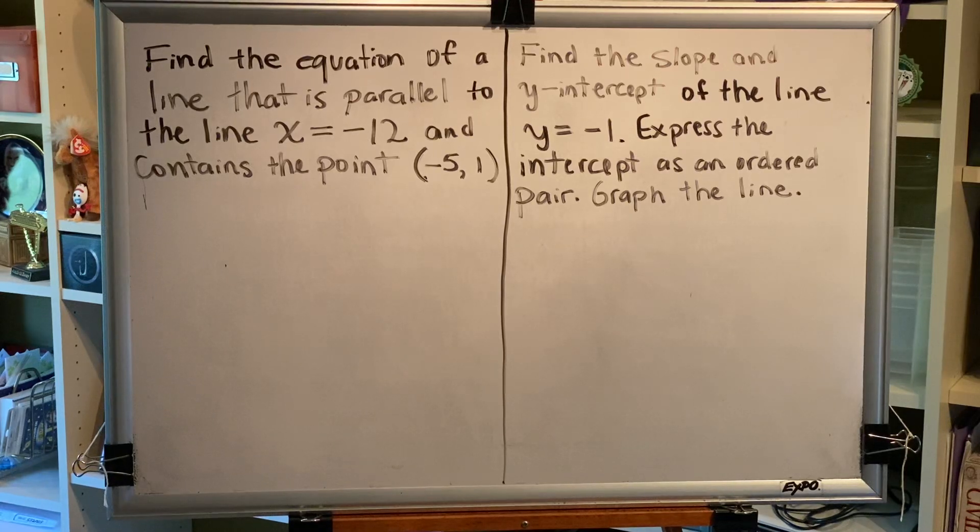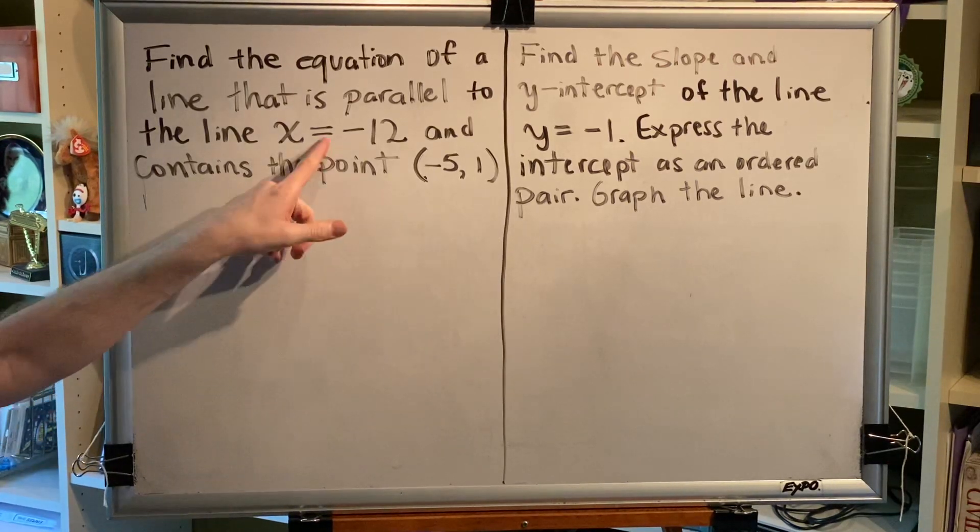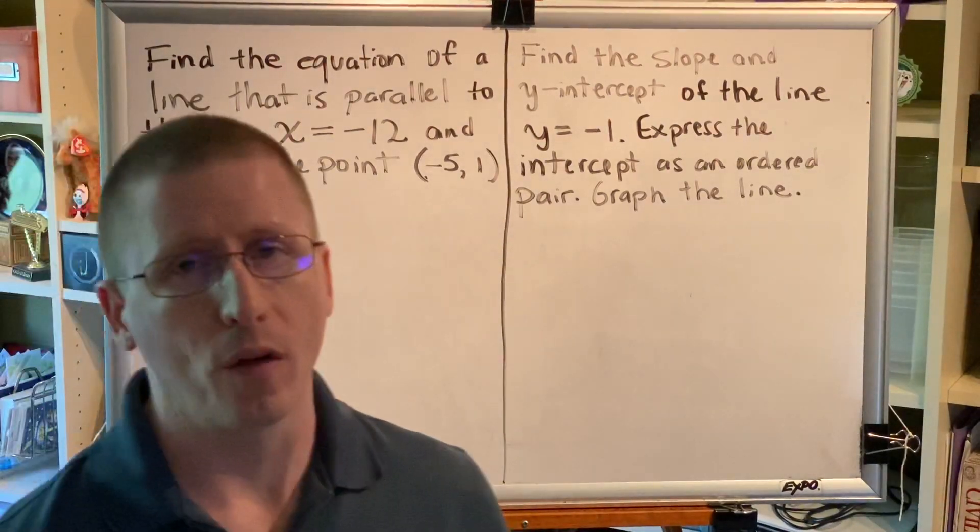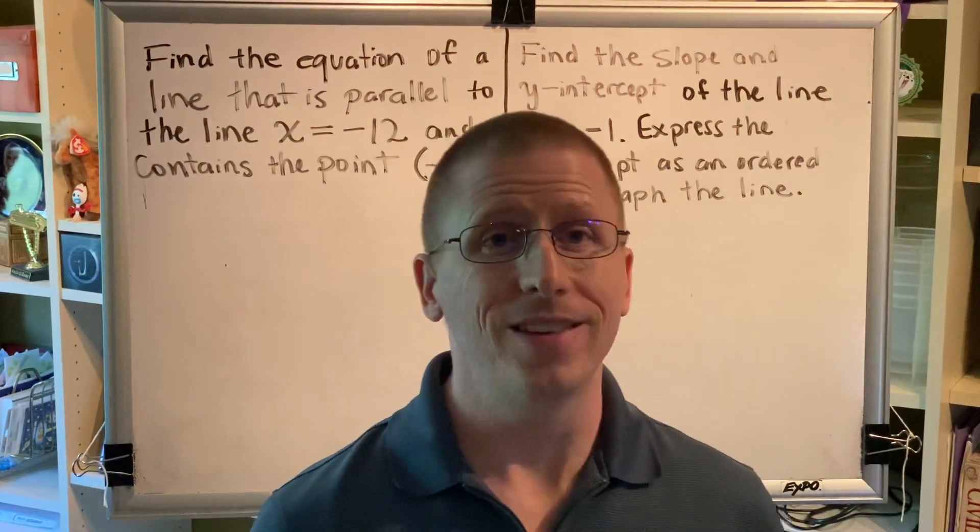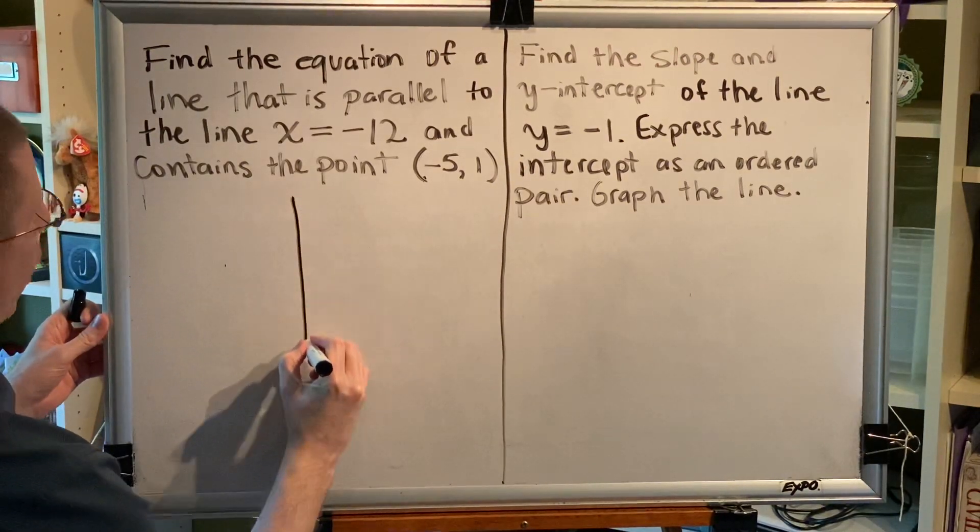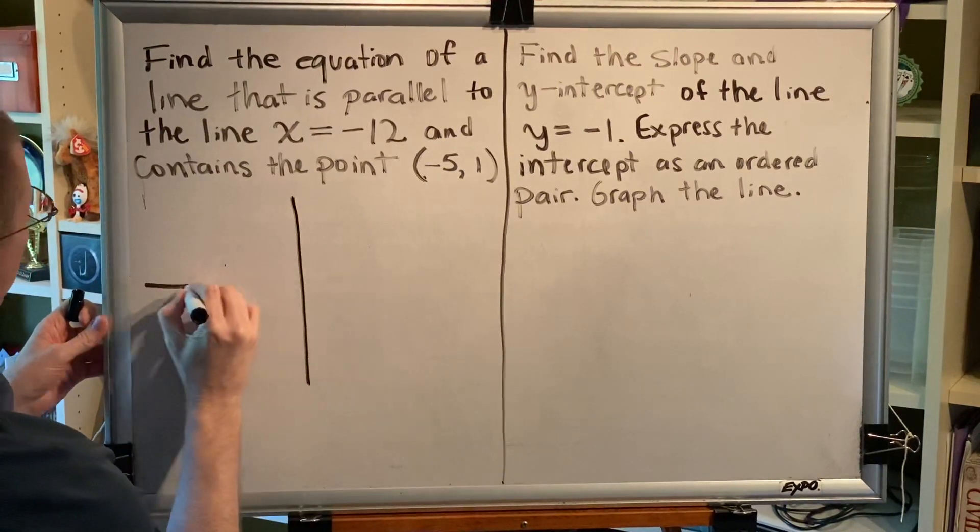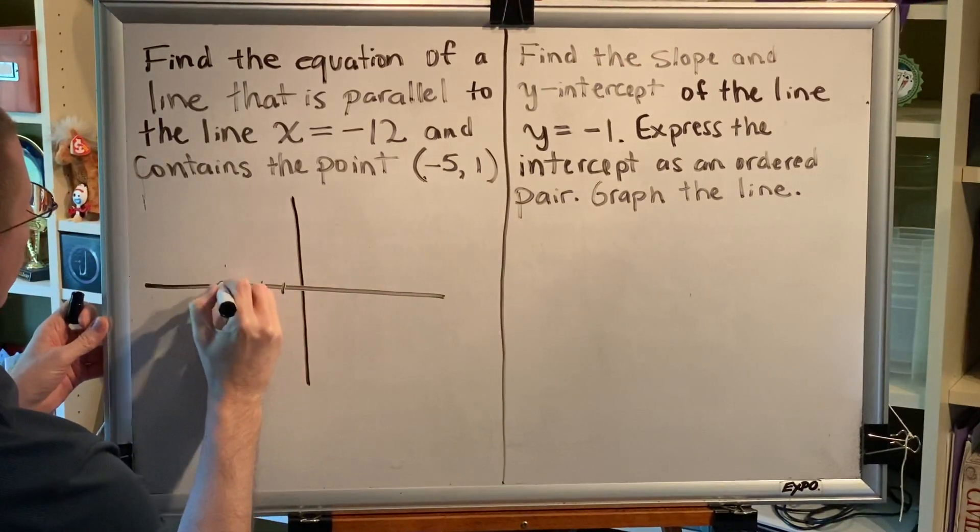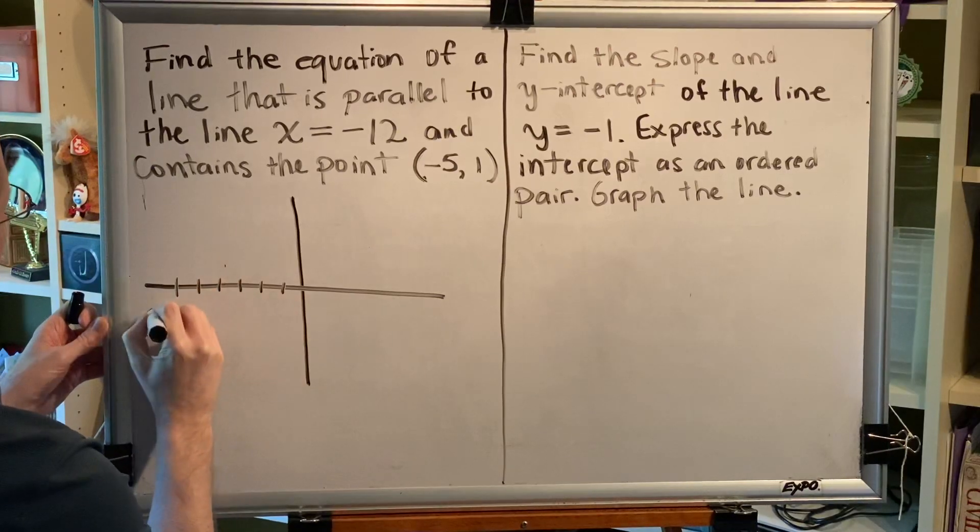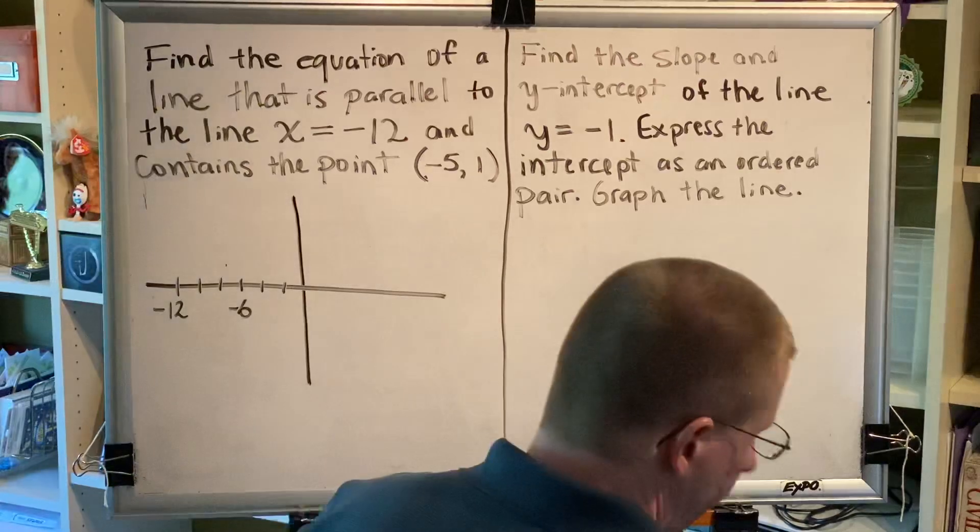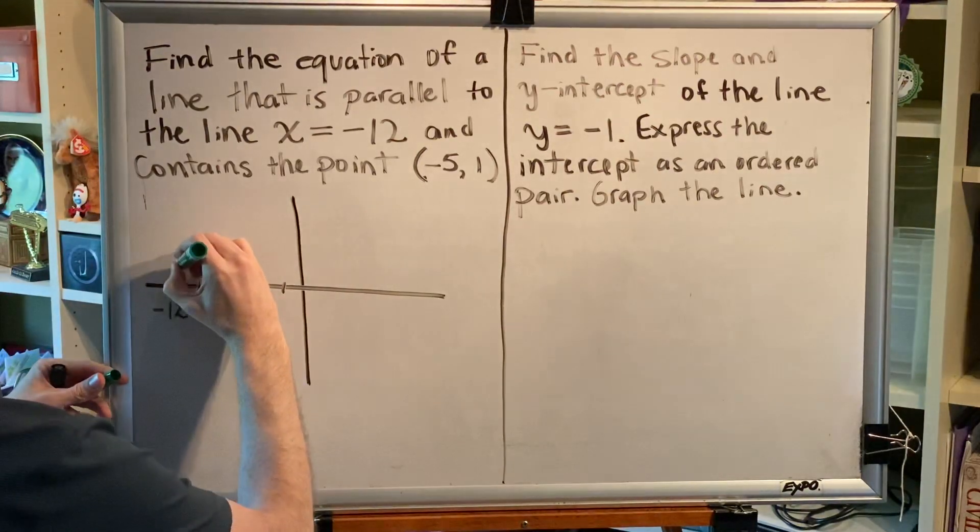For example, we need to find an equation of a line that's parallel to x equals negative 12. What kind of line is x equals negative 12? x equals negative 12 is a vertical line. Any line with an equation of the form x equals number is a vertical line. We can create a quick sketch of this line. We know that x equals negative 12, and we know that it's a vertical line. So it looks like this.